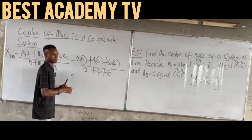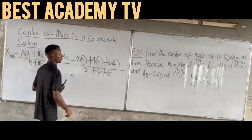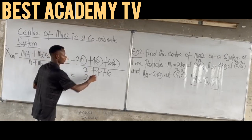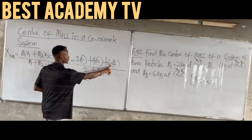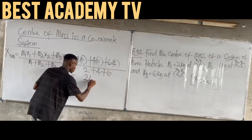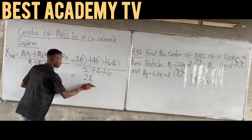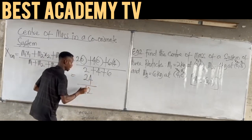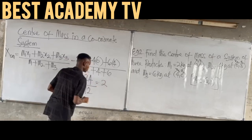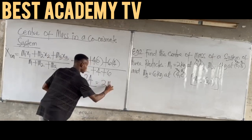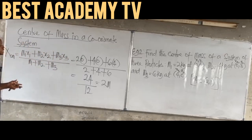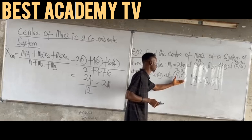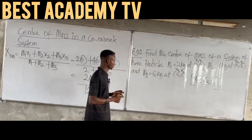So the numerator is 0 plus 0 plus 24 equals 24. The denominator: 2 plus 4 plus 6 equals 12. Therefore S center of mass equals 24 over 12 equals 2 meters. The unit is meters because the coordinates were not specified — so we use SI units. Please take note.